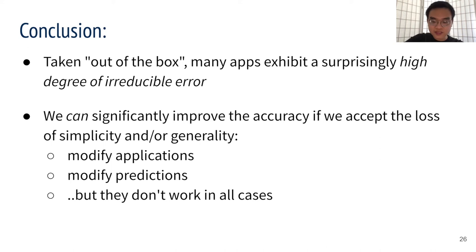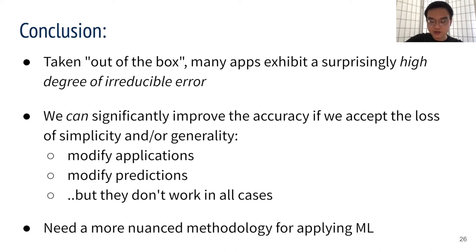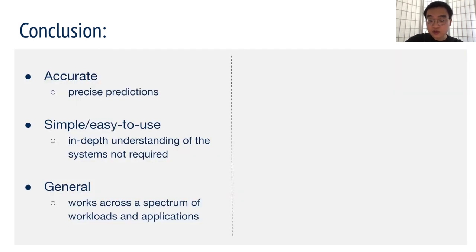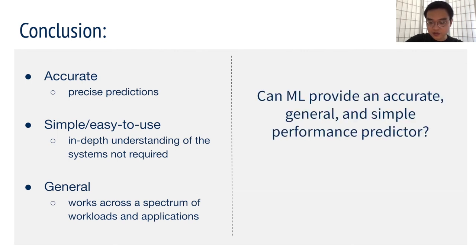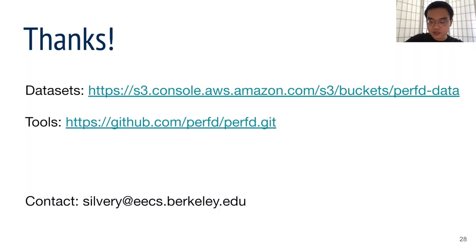Overall, this suggests that we need a nuanced methodology for applying machine learning to performance prediction, as what we did in this work. Finally, going back to where we started, can machine learning offer predictions that are accurate, simple, and general at the same time? And our answer from this paper is no. With that, thank you for listening.